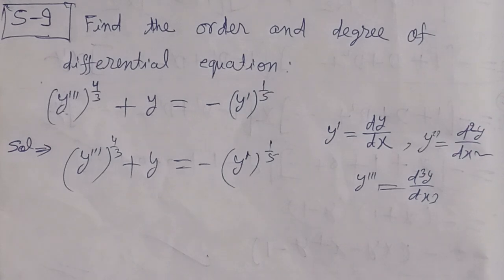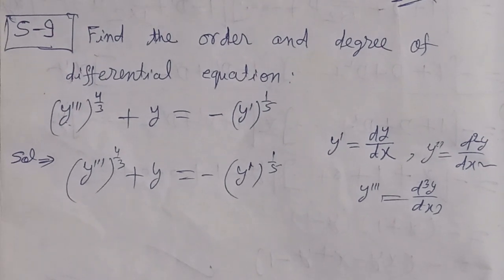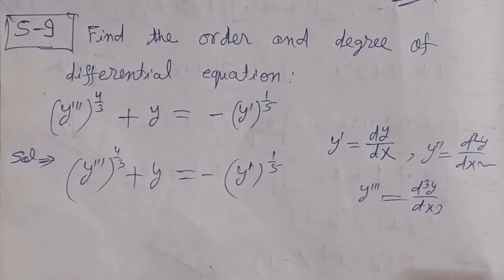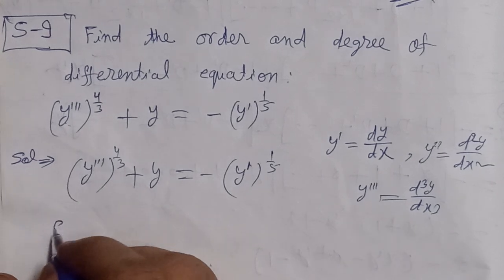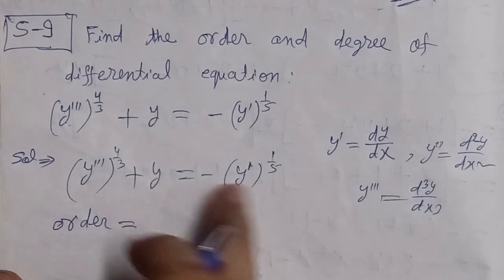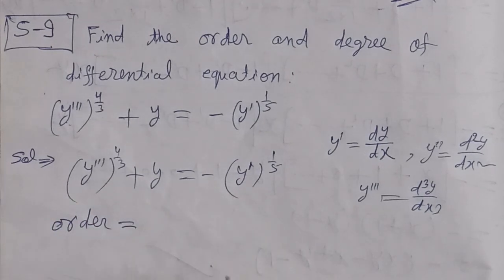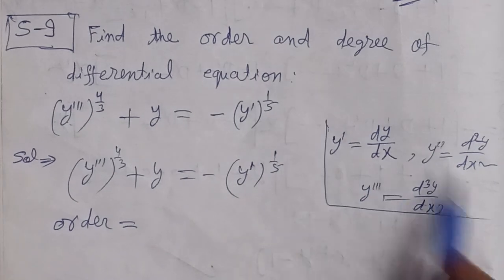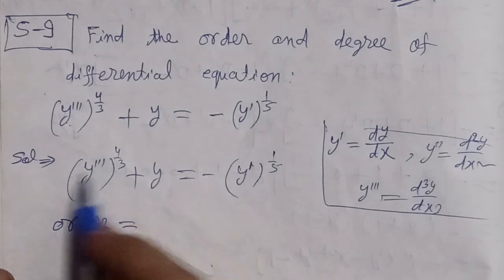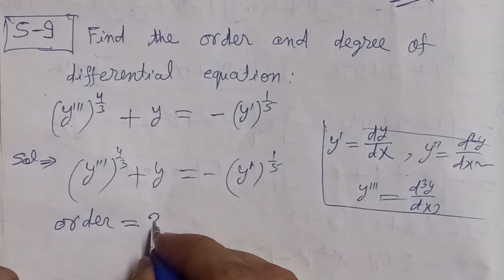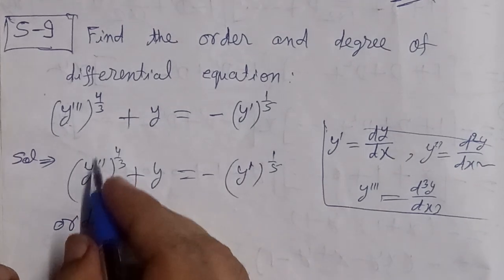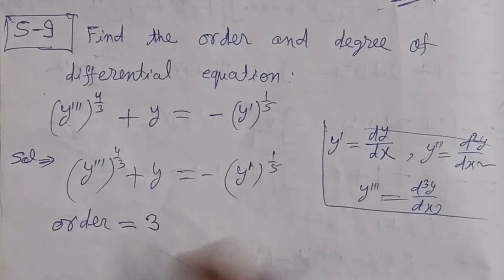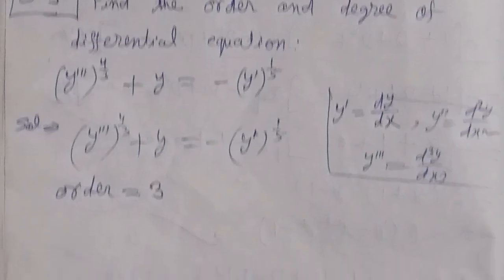Regarding what is the order and what is the degree of this differential equation, we have made a video on this and we will provide the link in the description. To find the order, we see the maximum number of times differentiation is done. Here, the maximum is 3 times differentiation with respect to x, so the order is 3.